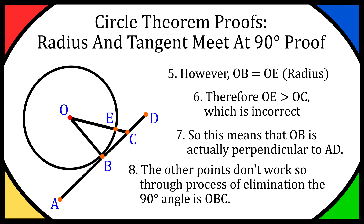So through the process of elimination, the 90 degree angle is at OBC, meaning the perpendicular line is OB.